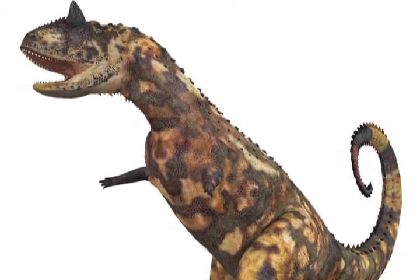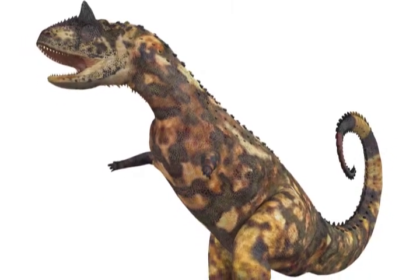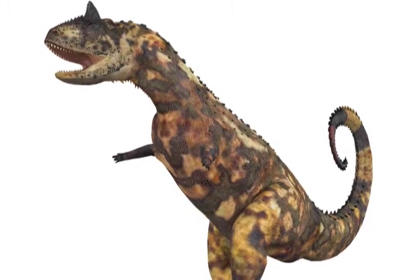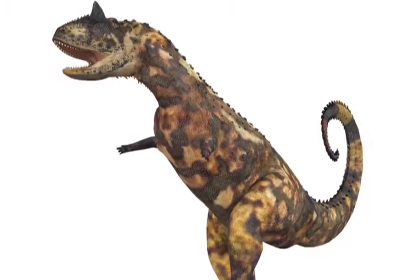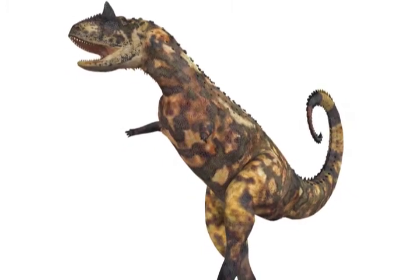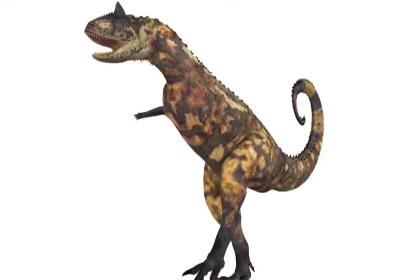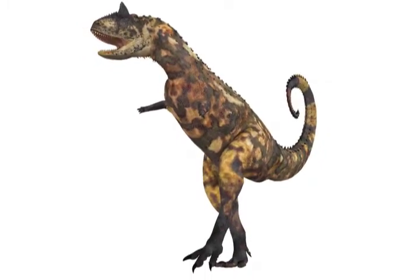Carnotaurus also had extremely short forelimbs, which is also a bit of a puzzle. The arms were too small to be of any real use in grasping or subduing prey. Each arm had four fingers, but the fingers were fused together and could not be moved. The fingers also lacked claws. If Carnotaurus hadn't gone extinct, its descendants might have lost their arms entirely as they evolved.